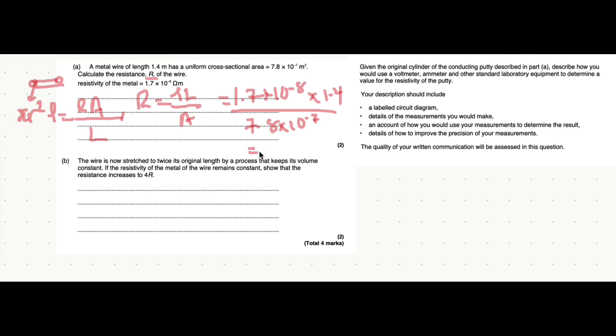So, we have 1.7 times 10 to the power of minus 8 multiplied by 1.4 all divided by 7.8 times 10 to the power of minus 7. And all of that is equal to 0.0305. Let's write that out. 0.0305 ohms.